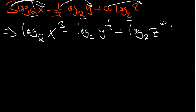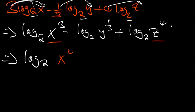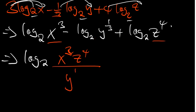Now we can combine these. The positive terms multiply and go on top; the negative term goes on the bottom. So the answer is log base 2 of (x³ · z⁴) divided by y^(1/3).